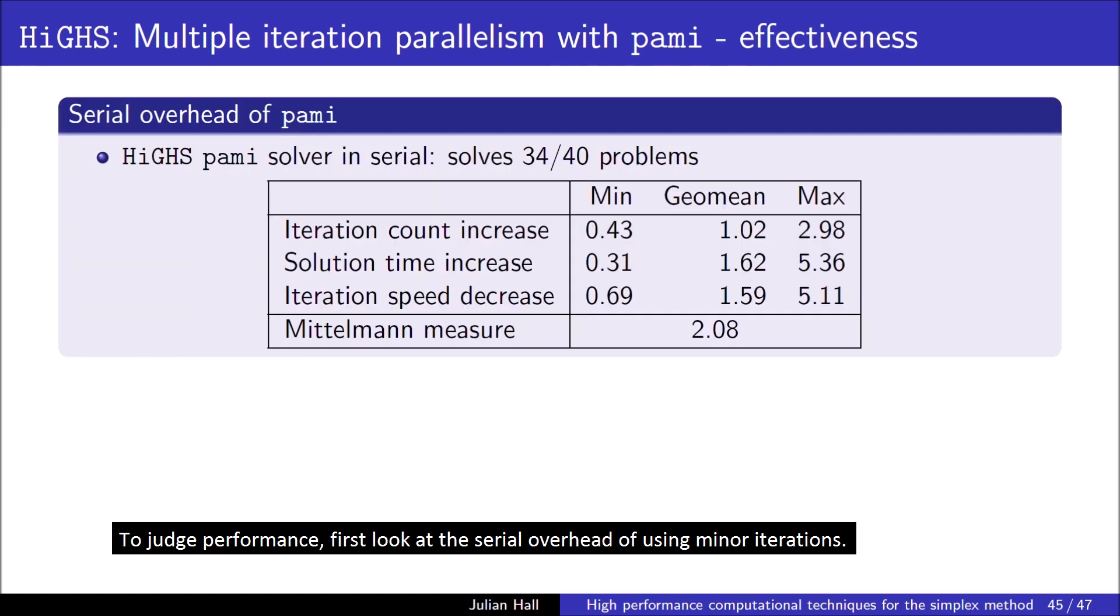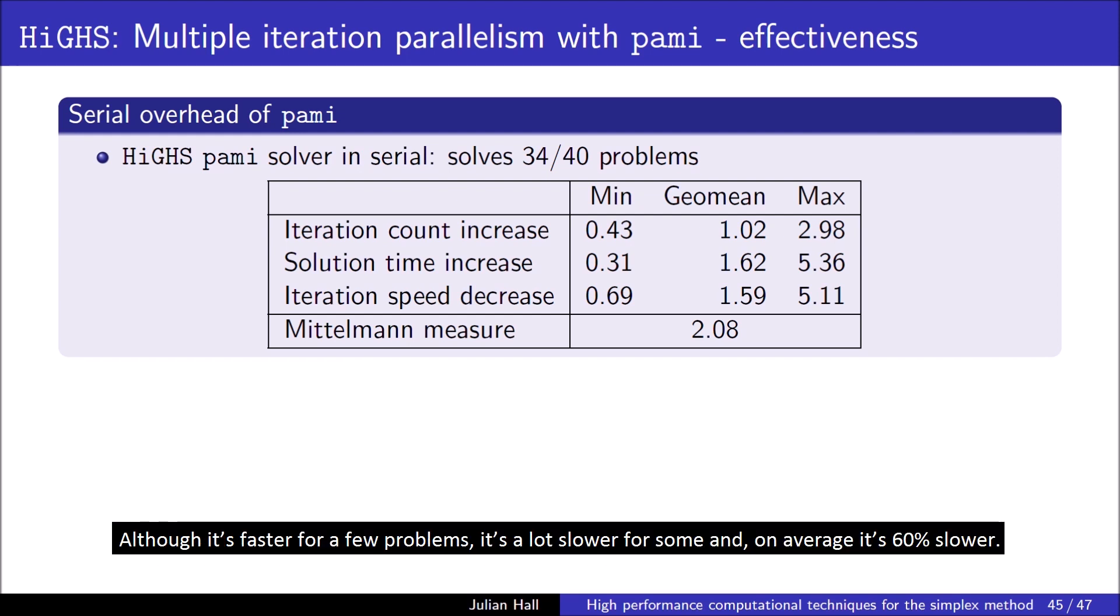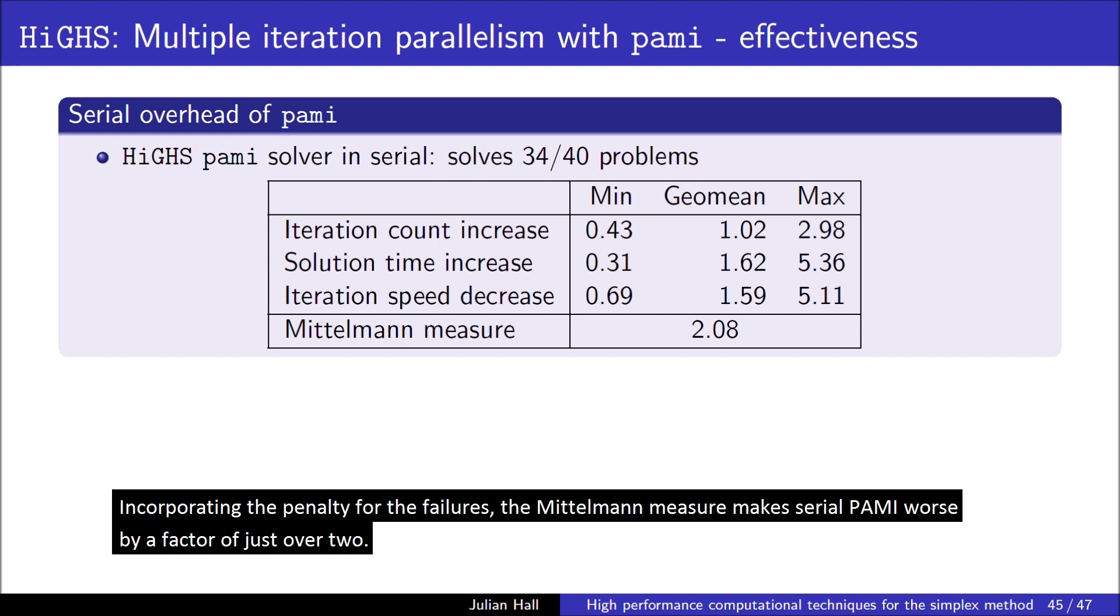To judge performance, first look at the serial overhead of using minor iterations. PAMI fails to solve three of the problems previously solved. This is the first time it's been tested on these problems. Although it's faster for a few problems, it's a lot slower for some and, on average, it's 60% slower. Incorporating the penalty for the failures, the Mittelman measure makes serial PAMI worse by a factor of just over two.